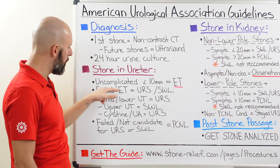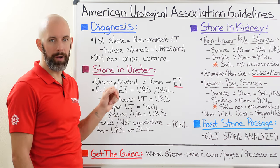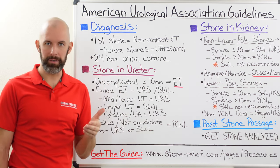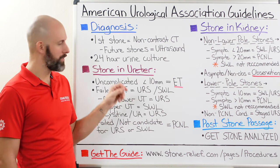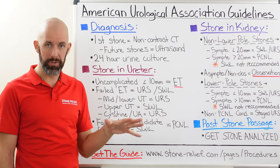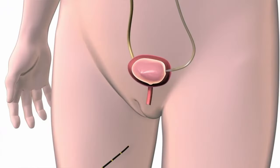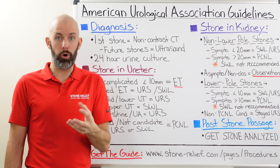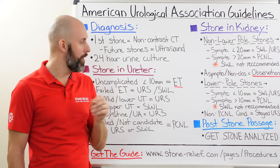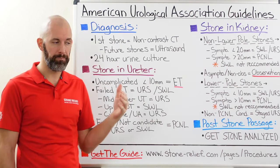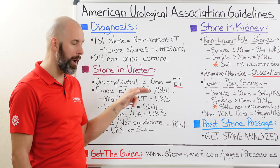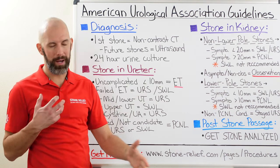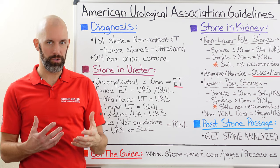If expulsive therapy fails, the first thing they're going to recommend is ureteroscopy, and if that's not an option, shockwave lithotripsy is the next recommendation. Ureteroscopy is recommended as the first-line option because it has a higher stone-free rate in a single session — they're going to remove more or all of your kidney stone in a single session compared to shockwave lithotripsy, so it's more efficient. However, ureteroscopy comes with a much higher rate of complication than shockwave lithotripsy.